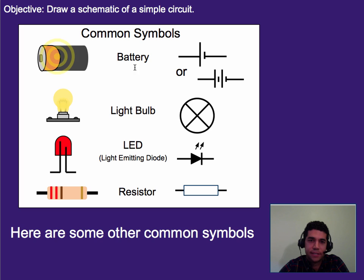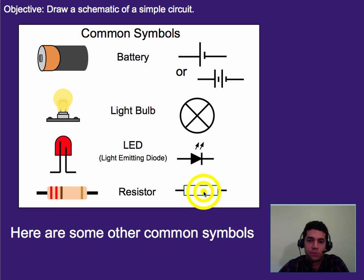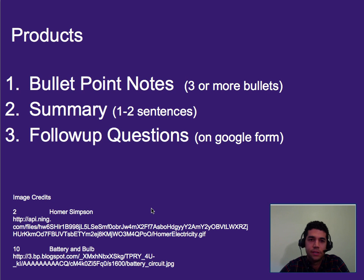Here are some other common schematic symbols. A battery would look like one of these. A light bulb would look like this. An LED — one of those small little colored lights, often used for energy-saving Christmas lights — looks like this. And then a resistor, which we'll talk more about, looks like this. That's it. Three or more bullet points worth of notes, a one to two sentence summary, and please do your follow-up questions on Google Forms.